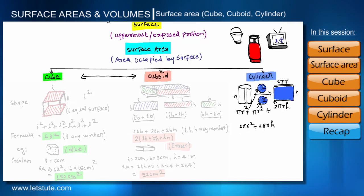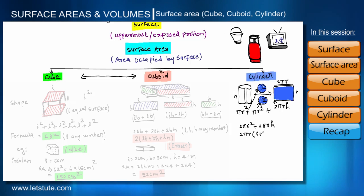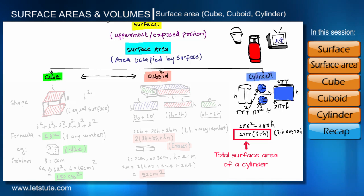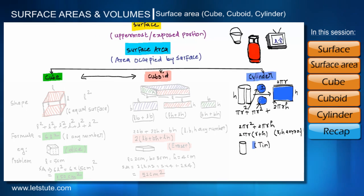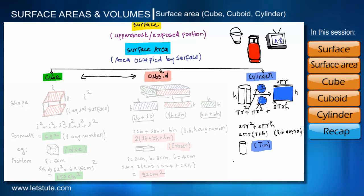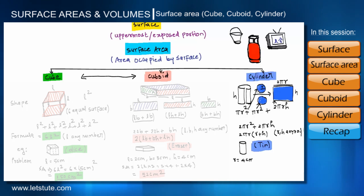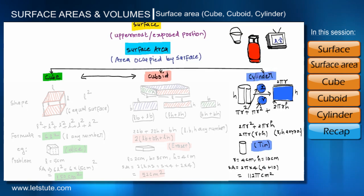Taking 2πR as a common factor, the formula becomes 2πR(R + H), where R and H can be any numbers. A coating tin is the best example of a cylinder. Let us solve a problem: find the total surface area of a tin with radius R = 4 cm and height H = 10 cm. The total surface area = 2π(4)(4 + 10) = 2π(4)(14) = 112π cm².